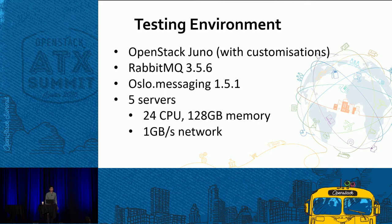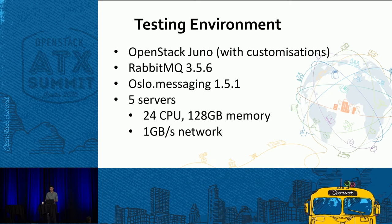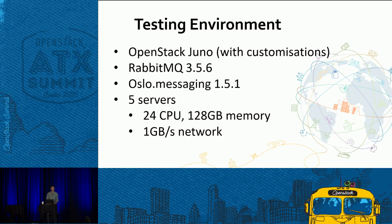Our testing environment used OpenStack Juno, RabbitMQ 3.5.6, and Oslo.messaging 1.5.1. For our test environment we used five servers, each with 24 CPUs, 128 GB of RAM, connected via a one-gigabit network. Keep in mind a lot of these results are based on Juno's code, so there are probably quite a few optimizations since then.